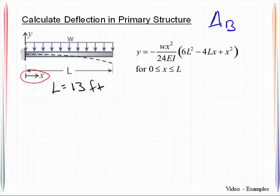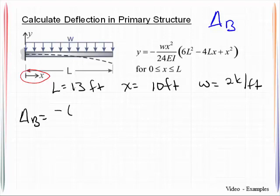Where the length we will use is 13 feet. The point of interest, so that is this x value, is at a distance of 10 feet, and of course the distributed load is 2 kips per foot. So let's go ahead and get that plugged in. Delta B is equal to negative 2 times 10 squared over 24 EI.